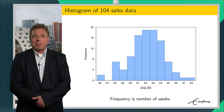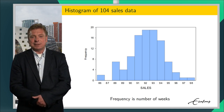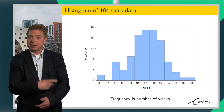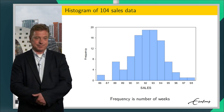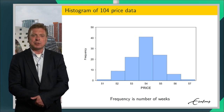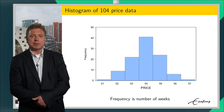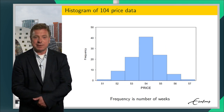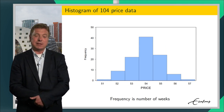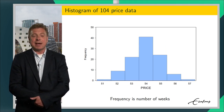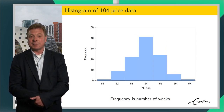The store manager can freely decide each week on the price level, as presented on the next slide. This histogram shows that prices vary from 51 to 57, with a median price of 54 and an average price also close to 54.